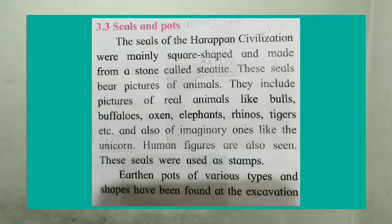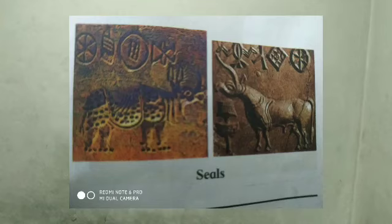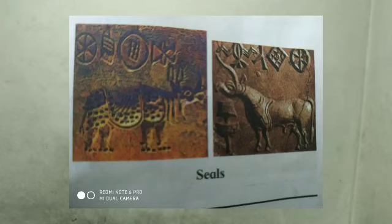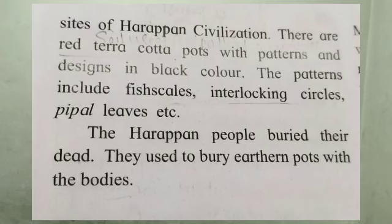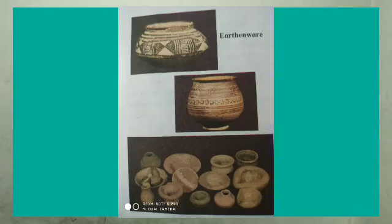The unicorn means a horn-projecting animal. There are pictures shown — just see those figures to get a proper idea. These seals were also used as stamps. Earthen pots of various types and shapes have been found at the excavation sites. There are red terracotta pots with patterns and designs in black color — terracotta is a type of soil used for pottery or making buildings. Patterns include fish scales, interlocking circles, and leaf designs. The Harappan people buried their dead and used to bury earthen pots with the bodies.